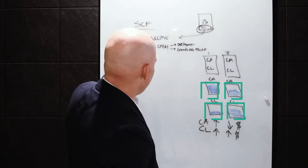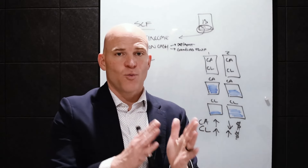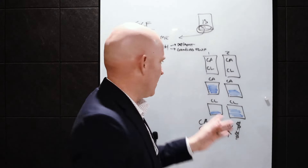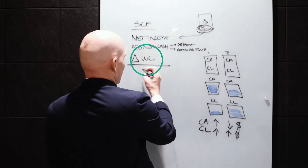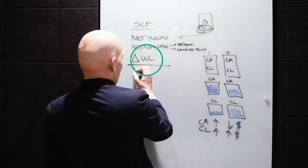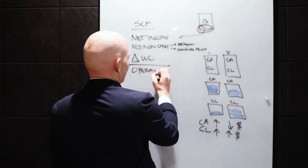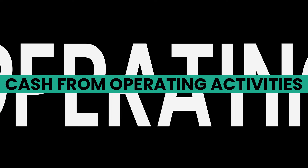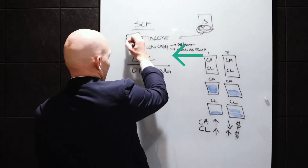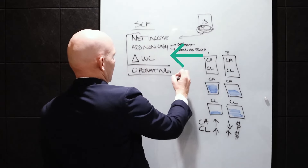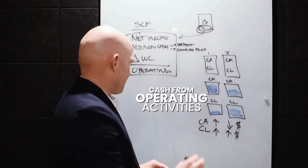When we take this change in working capital — the fluctuations from one period to the next on the balance sheet — we get the changes in working capital, which ultimately gives us cash from operating activities. This is the first section on the statement of cash flows: cash from operating activities.